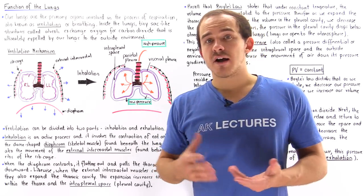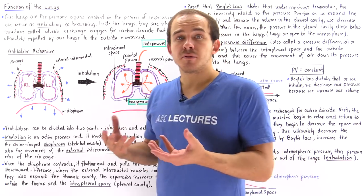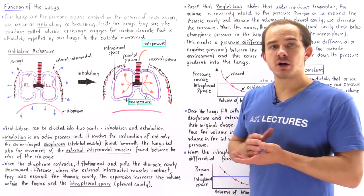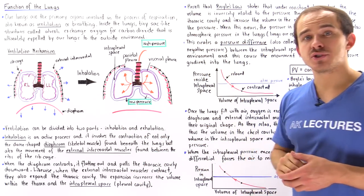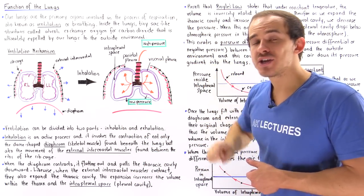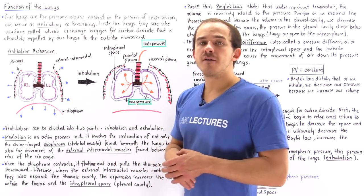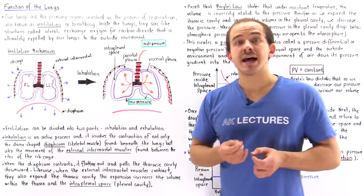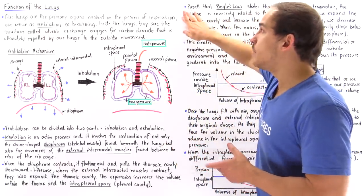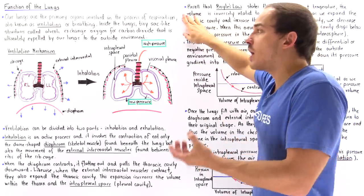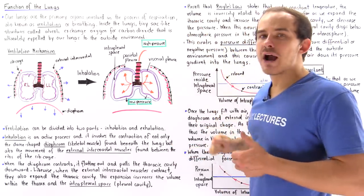Our lungs are the primary organs of our respiratory system and they function in the process of breathing. Breathing is a simple process of inhaling oxygen and exhaling carbon dioxide, also known as ventilation or respiration. This respiration process is not the same thing as cellular respiration that takes place within the individual cells of our body. Cellular respiration is when our cells use oxygen to produce ATP and produce carbon dioxide as a byproduct, but respiration is simply the breathing process by which we inhale oxygen and exhale carbon dioxide.